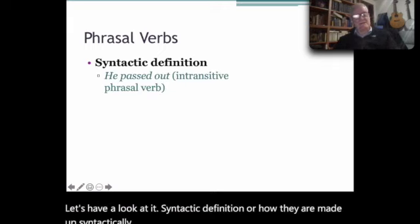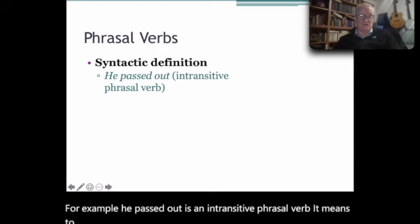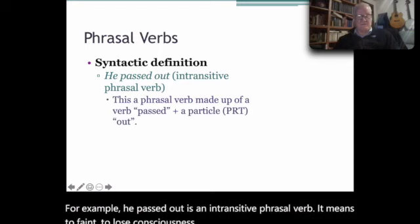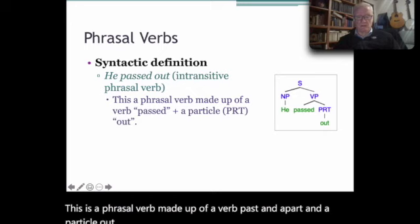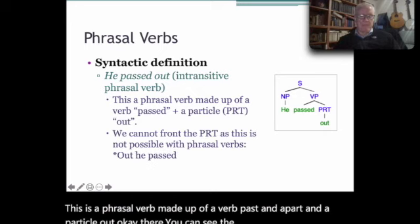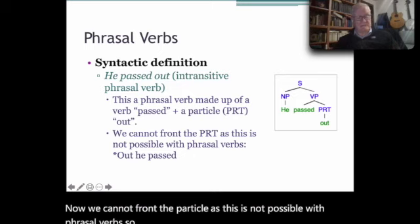For example, 'he passed out' is an intransitive phrasal verb. It means to faint, to lose consciousness. This is a phrasal verb made up of a verb 'passed' and a particle 'out.' There you can see the tree diagram. Now, we cannot front the particle as this is not possible with phrasal verbs. So you can't say 'out he passed,' at least not with the same meaning.